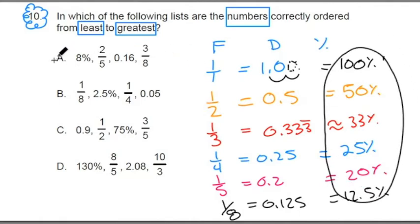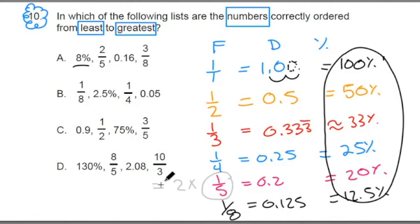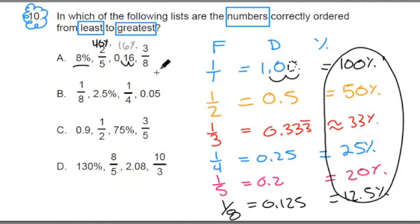Let's look at the first three in option A. The first number is 8% — it's already a percent. Two-fifths: I know one-fifth is 20%, so two-fifths is 40%. The next number, 0.16 — moving the decimal two spaces — becomes 16%. So we go 8% up to 40%, then down to 16%. That's not ordered least to greatest, so a frowny face on A.